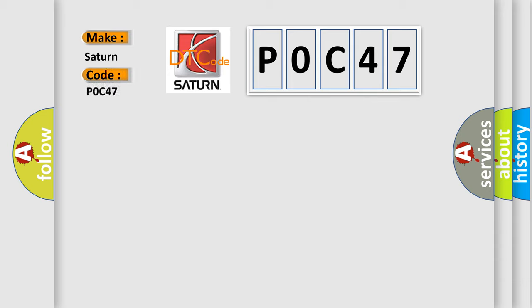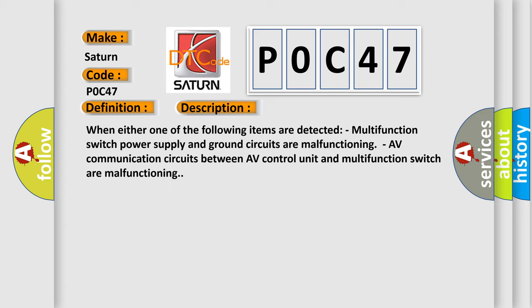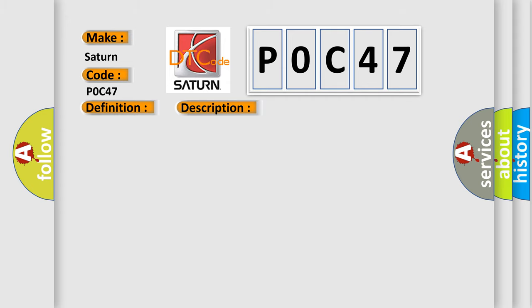Saturn car manufacturer. The basic definition is: HVAC circuit. And now this is a short description of this DTC code. When either one of the following items are detected: multi-function switch power supply and ground circuits are malfunctioning, or HVAC communication circuits between HVAC control unit and multi-function switch are malfunctioning. This diagnostic error occurs most often in these cases.